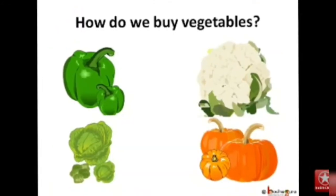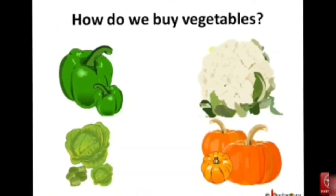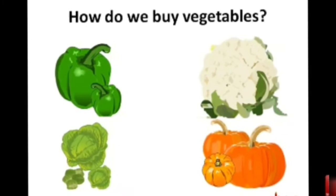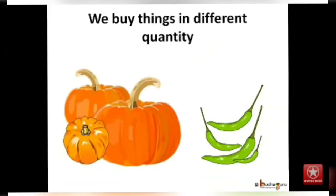But when we want to buy vegetables, then we cannot tell the vendor that I want capsicum lighter than this cauliflower or I want a pumpkin as heavy as this cabbage. So what do we do?